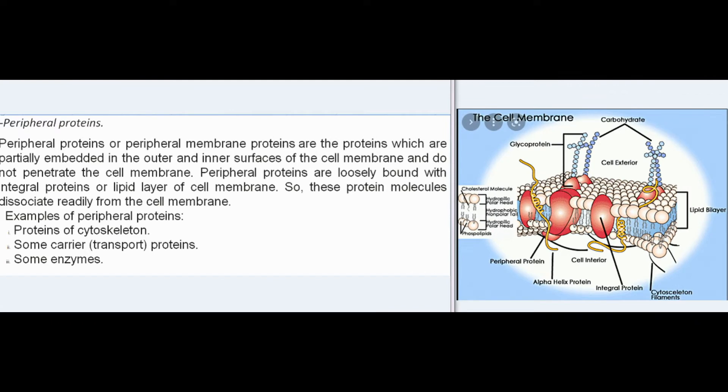Peripheral proteins or peripheral membrane proteins are partially embedded in the outer and inner surfaces of the cell membrane and do not penetrate it. They are loosely bound with integral proteins or the lipid layer, so they dissociate readily from the cell membrane. Examples of peripheral proteins include proteins of the cytoskeleton, some carrier/transport proteins, and some enzymes.